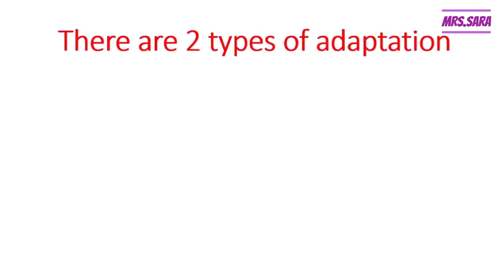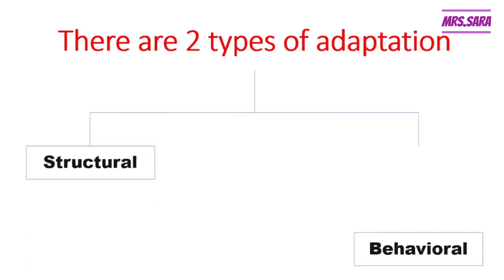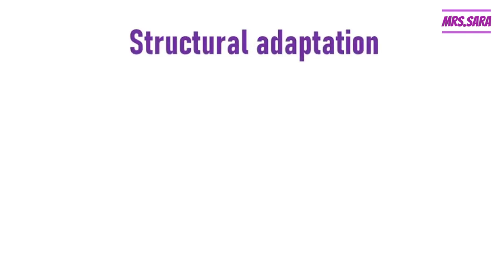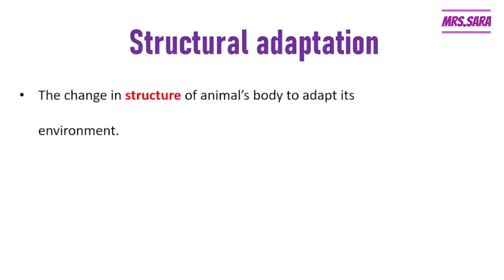You should know that we have two types of adaptation, Primary 4. There are two types of adaptation: structural adaptation and behavioral adaptation. Structural adaptation is the change in the structure of an animal's body to adapt to its environment.